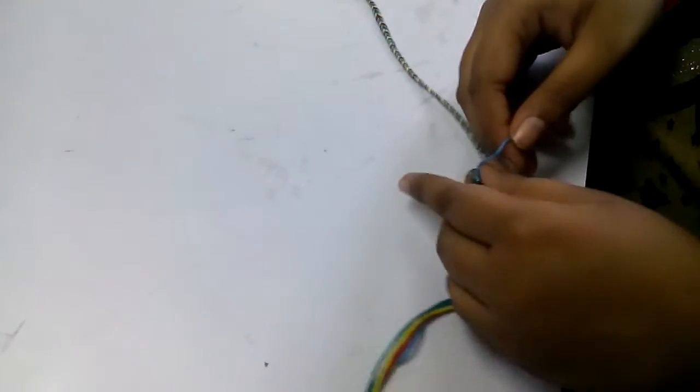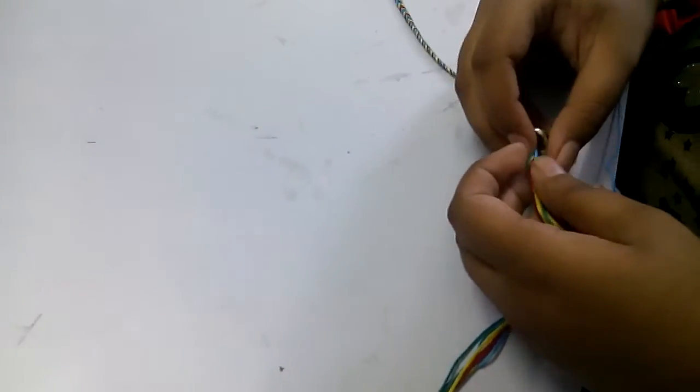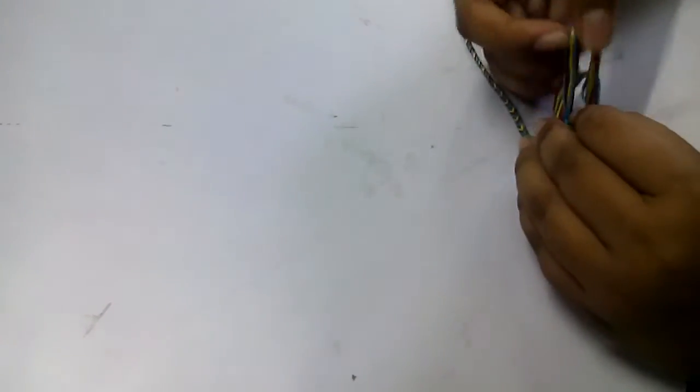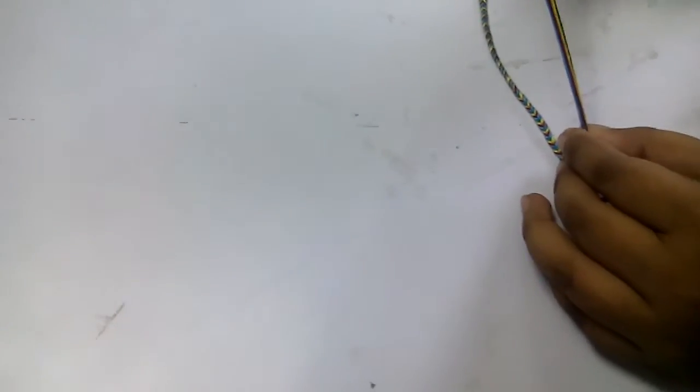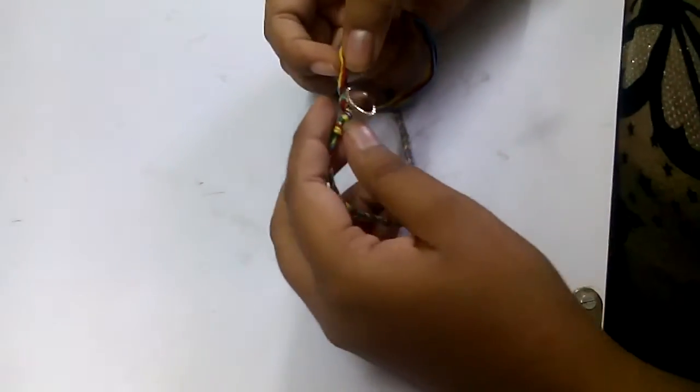Then take all the threads and tie a knot once again, so the button doesn't come out of your anklet.